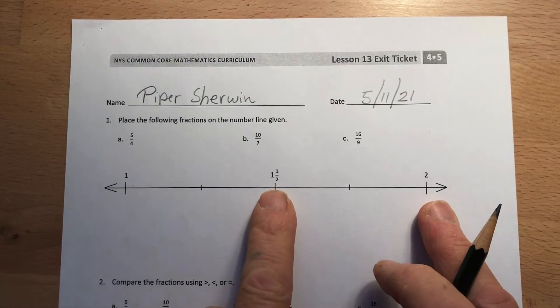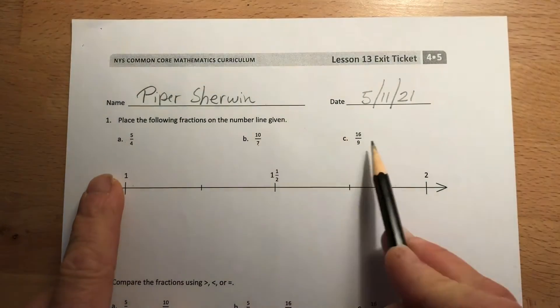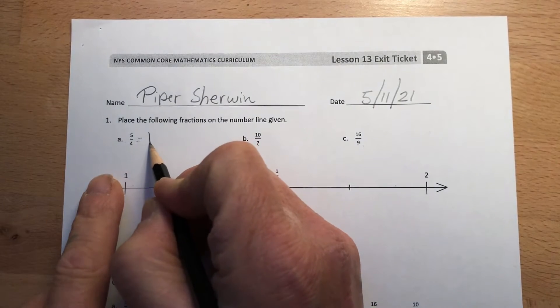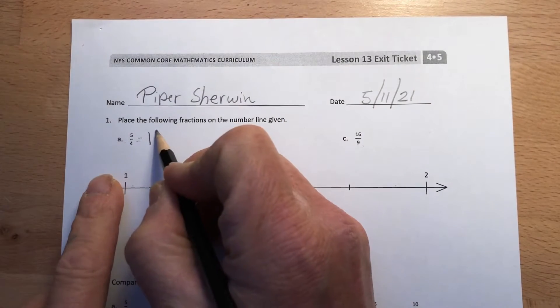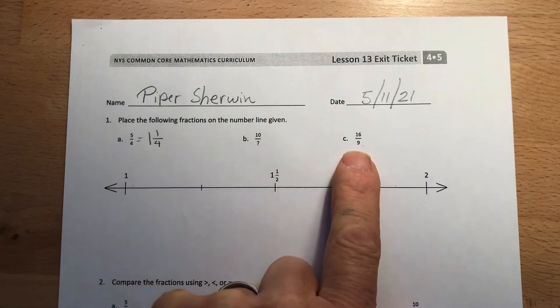All right, here are my fractions. First I want you to make sure that you convert these fractions, the whole numbers, like a mixed number and a fraction. So five fourths turns into one and one fourth. You do the same thing for each of these and then place them on this number line.